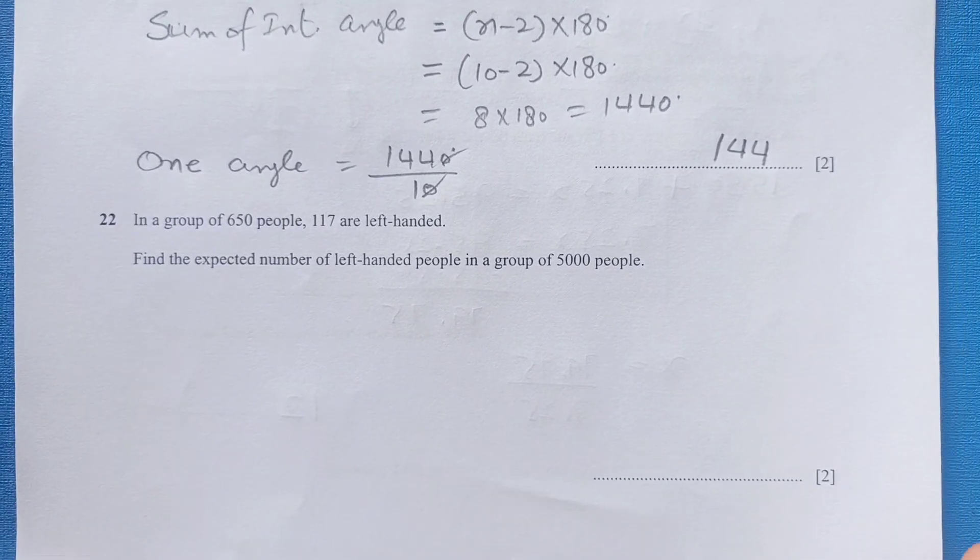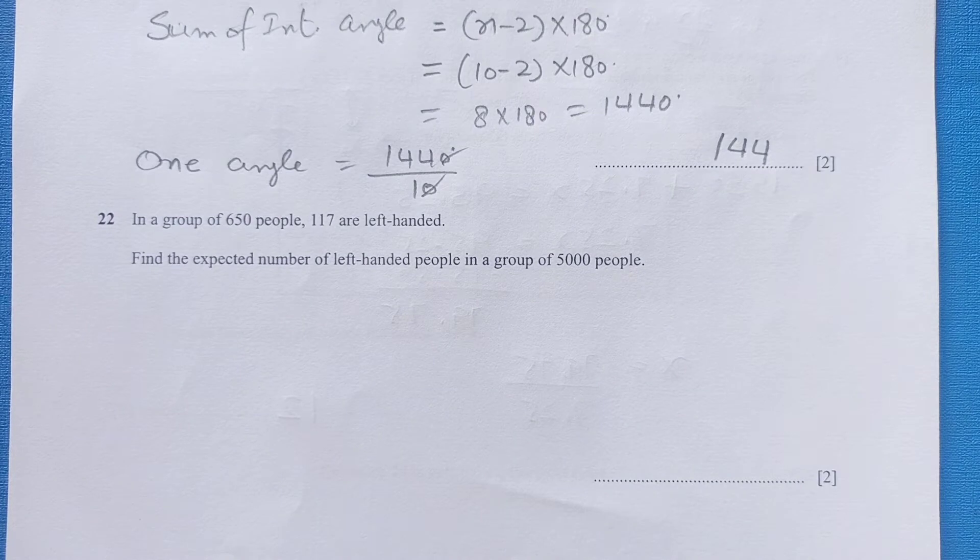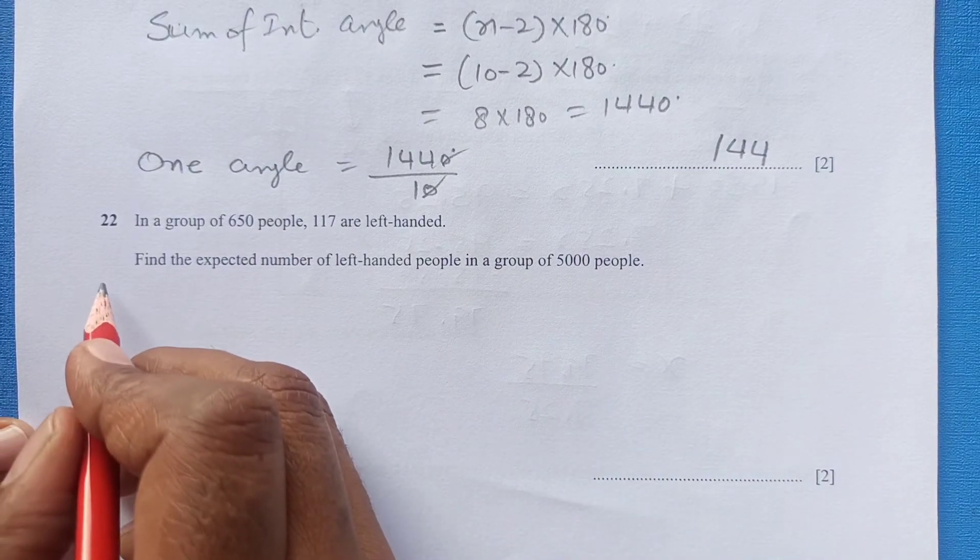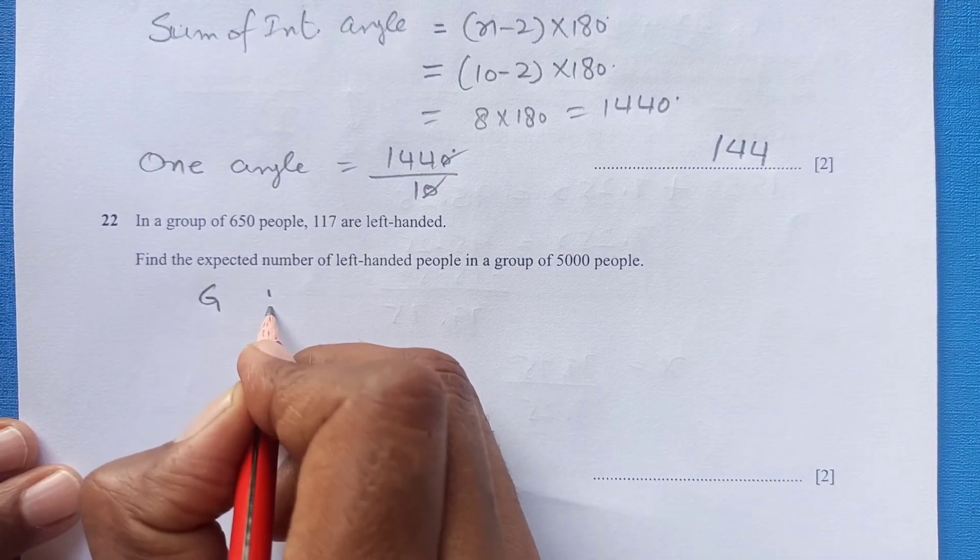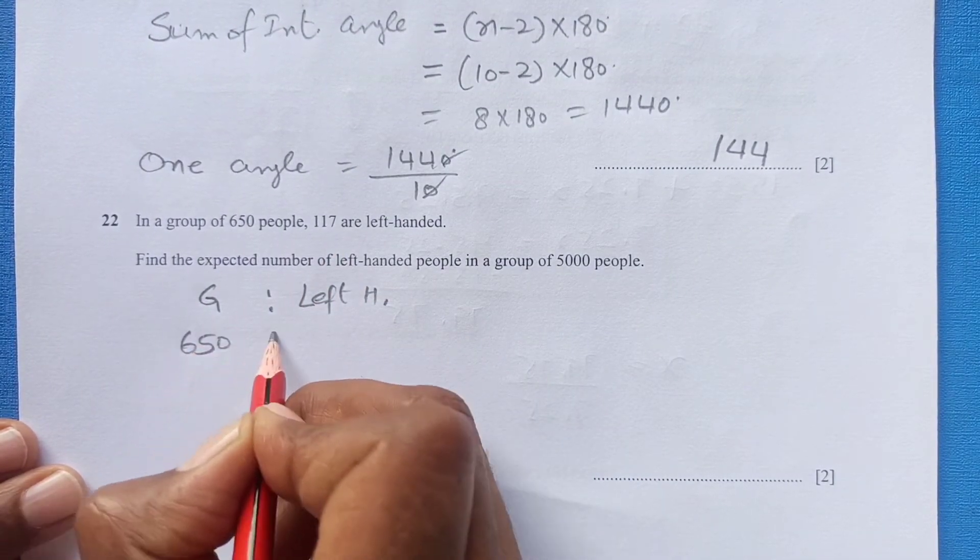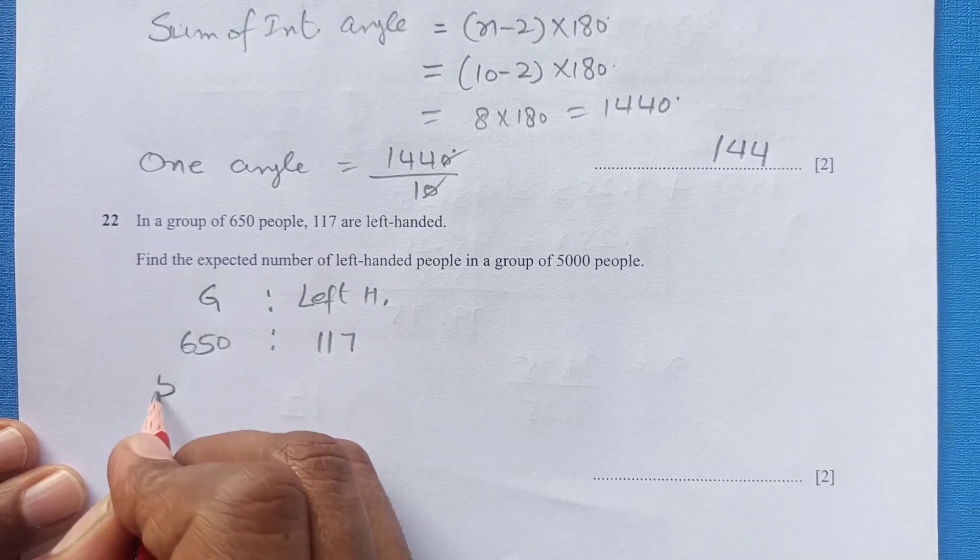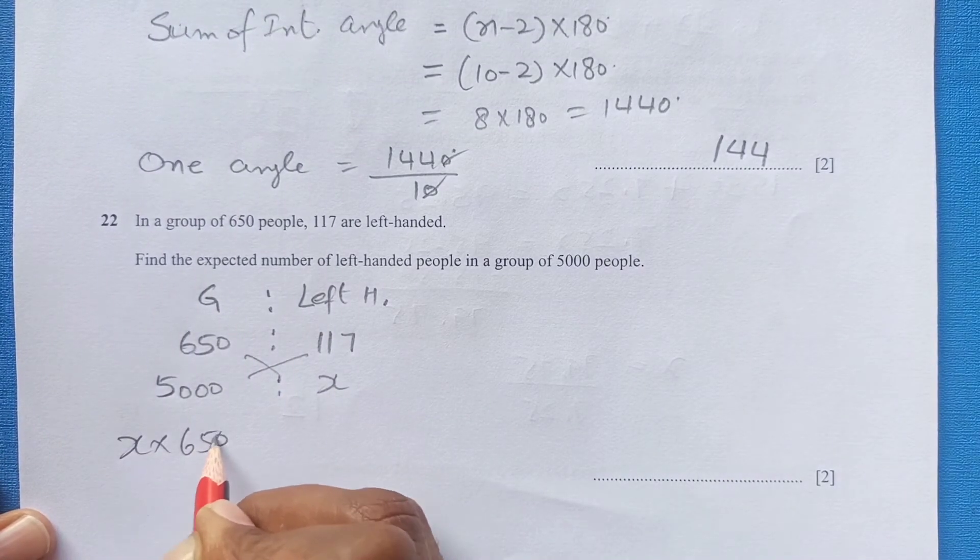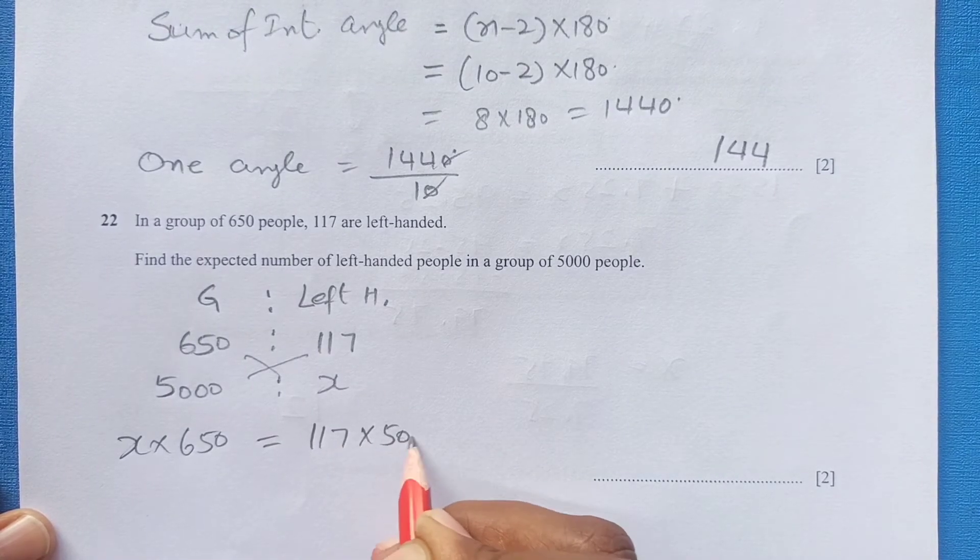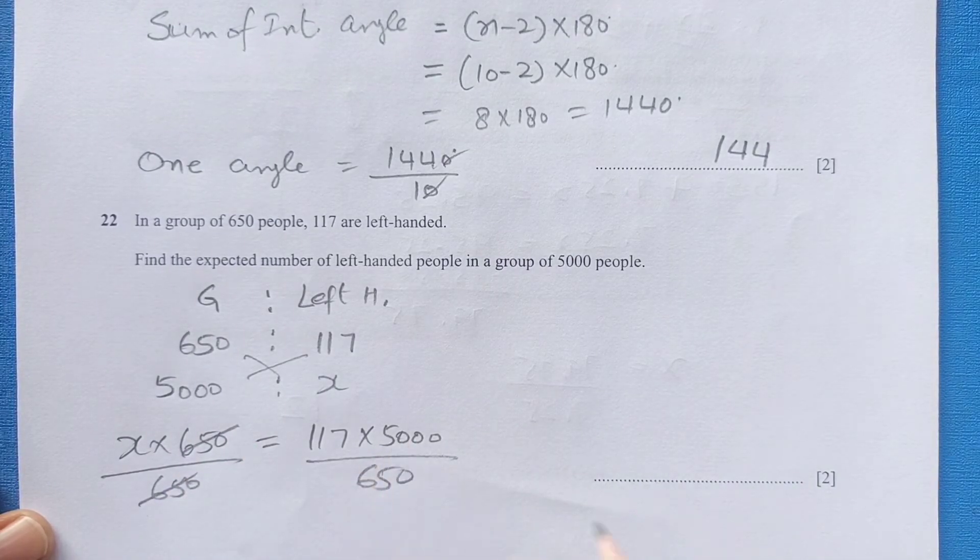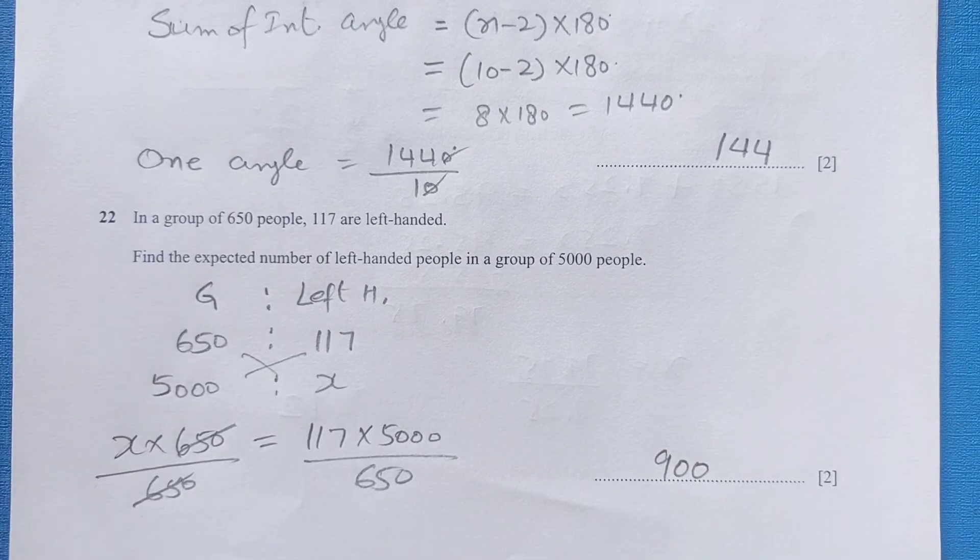Now number 22. In a group of 650 people, 170 are left handed. Find the expected number of left handed people in group of 5000. So you can easily use the ratio method here. So we have group here and then we have left handed people. So group of 650, left handed are 170. If the group is of 5000, how many left handed will be? Just cross multiply. So this will give you 170 times 5000 divided by 650. So when you calculate this, this equals to 900.